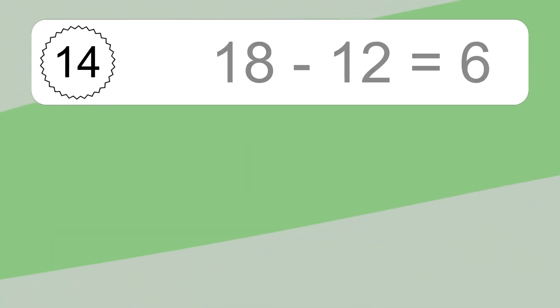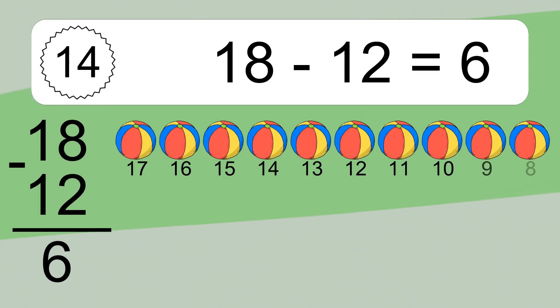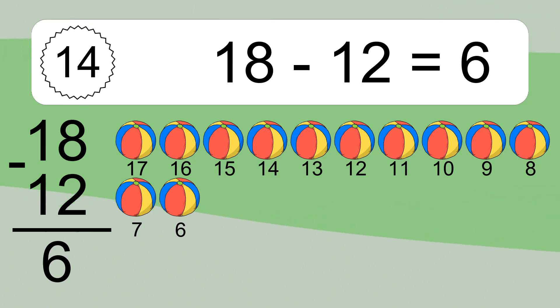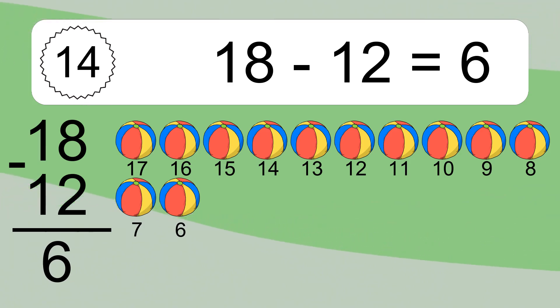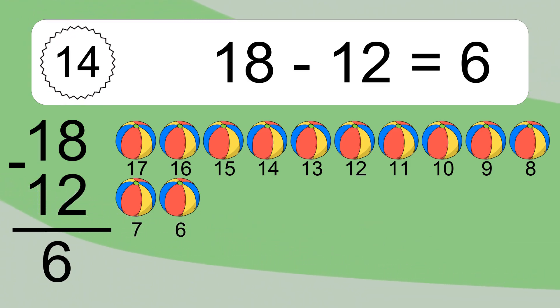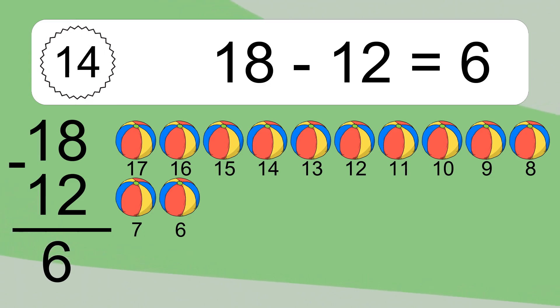18 minus 12 equals what? 18 minus 12 equals 6. Let's count it. 17, 16, 15, 14, 13, 12, 11, 10, 9, 8, 7, 6.